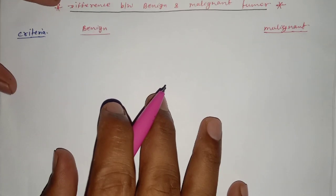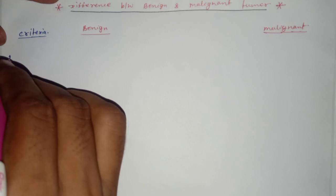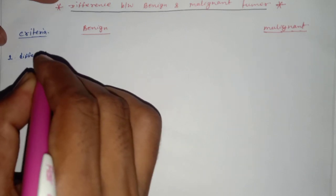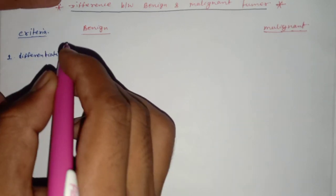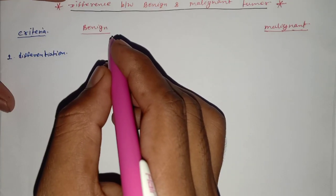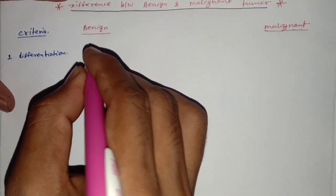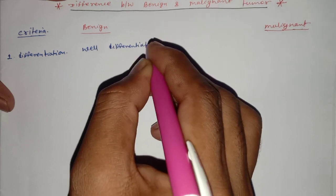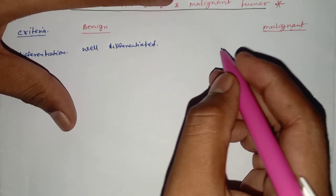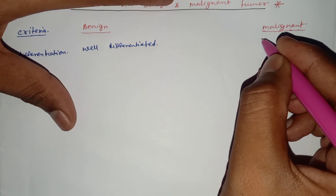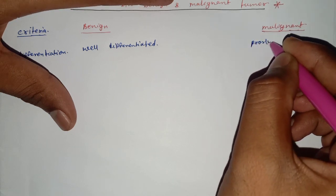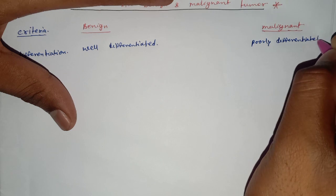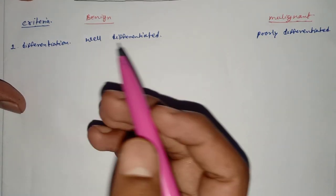The first criterion is differentiation. The benign tumours are well differentiated, and the malignant tumours are undifferentiated or poorly differentiated. We will discuss all these terms in the next lecture.